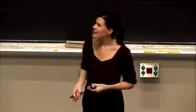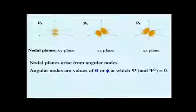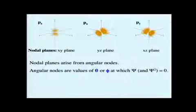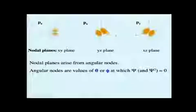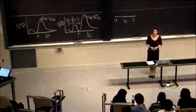Nodal planes arise from any place you have angular nodes. We talked about radial nodes when we were doing these radial probability density diagrams here.